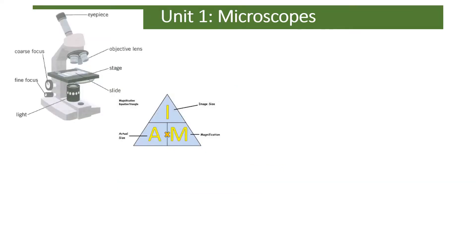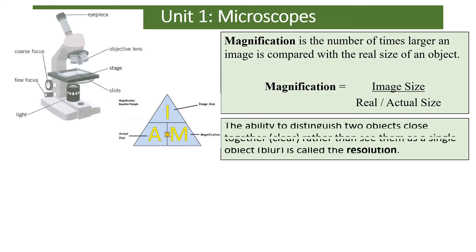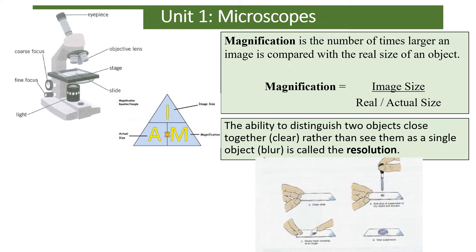First of all you need to know about microscopes, because these are how we study cells and do the study of cytology — which is the study of cells. You need to know the different parts of a microscope and be able to talk about them in a method about how to use it. So let's introduce what we would do before we get to the microscope.